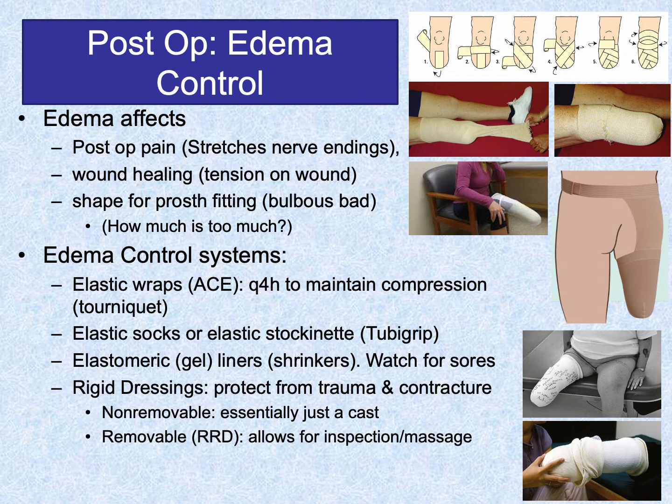There are plenty of protocols for edema control. The goal of shaping is an eventual circumference difference of approximately a half inch between mid-patellar tendon level and the distal end — that's for below-knee amputees.